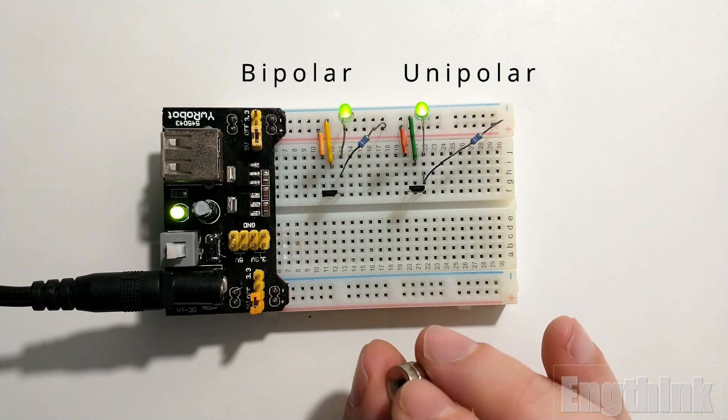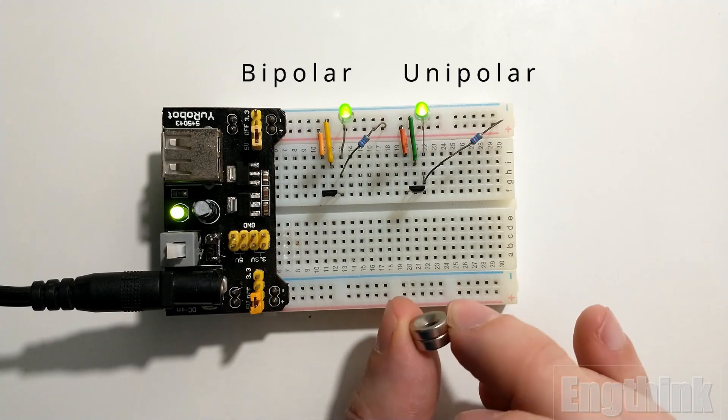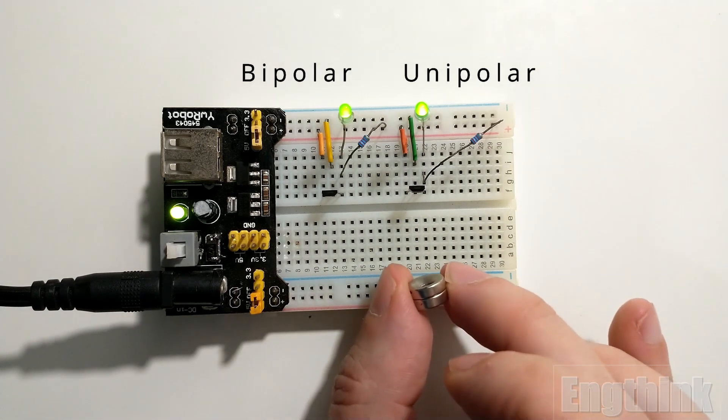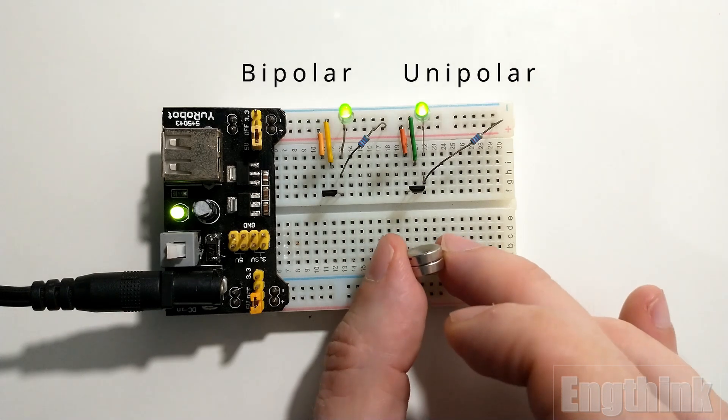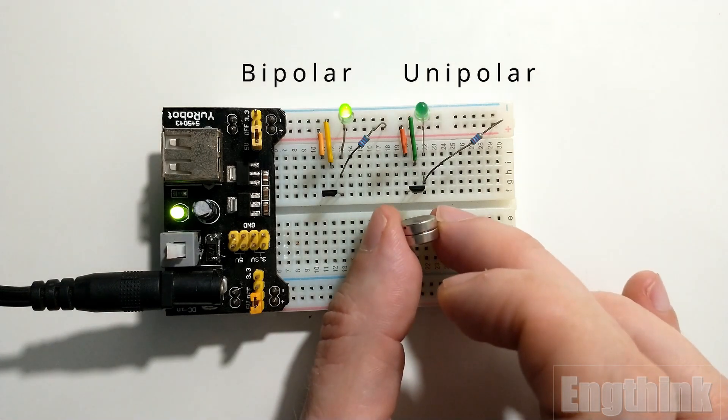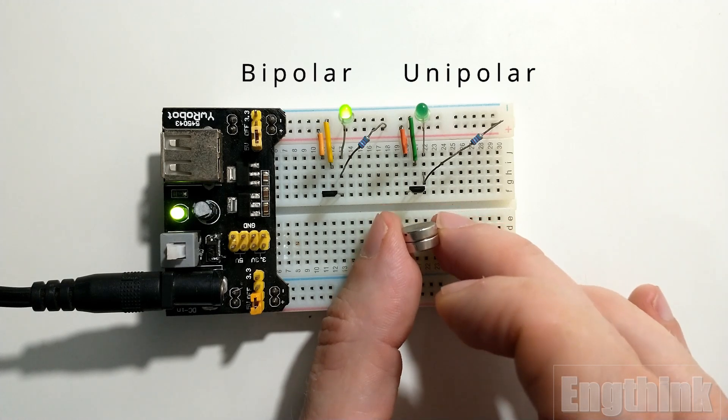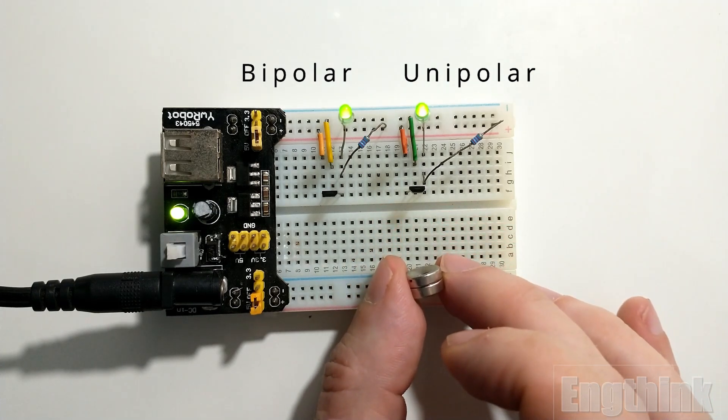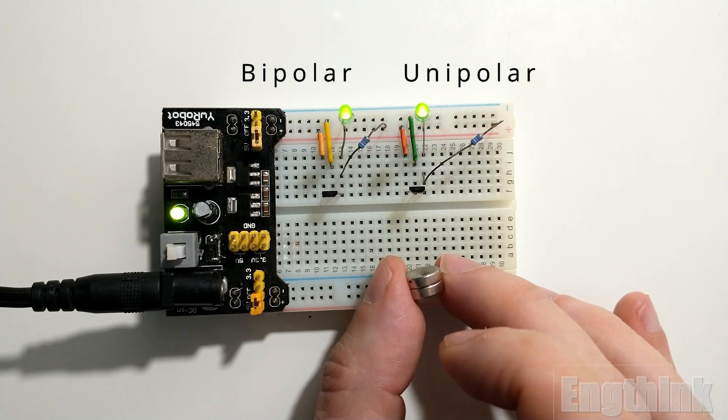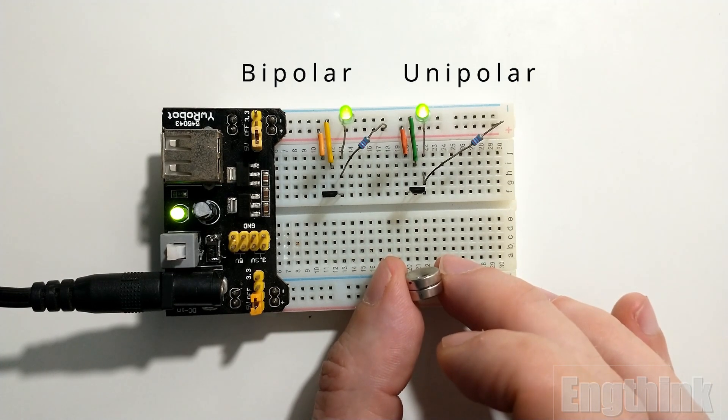Now approaching the magnet with the other surface, we can observe that the LED will switch off and keep off until I keep the magnet in front of the sensor.